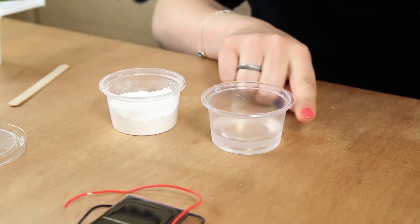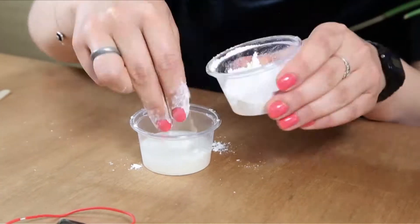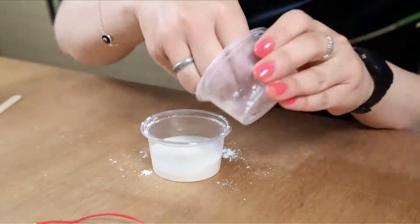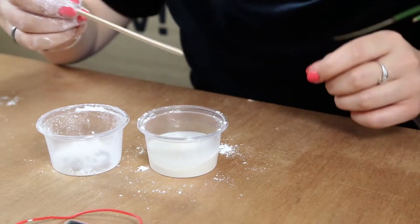And then what you want to do is add little by little the plaster into the water. So then you go in with a little stirring instrument, it can be wooden.